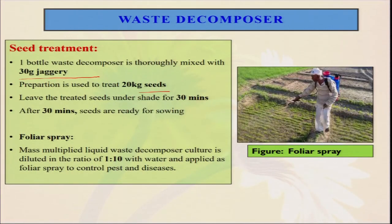You can also use the OS Decomposer as a foliar spray by mass multiplying the liquid OS Decomposer culture. We should not directly use the small bottle as it will be easily finished. We are always advocating to mix in water at a ratio of 1:10 — if you have 1 liter bottle of OS Decomposer, take 10 bottles of the same size for water. After that, you can spray it over the crop residue in your field.